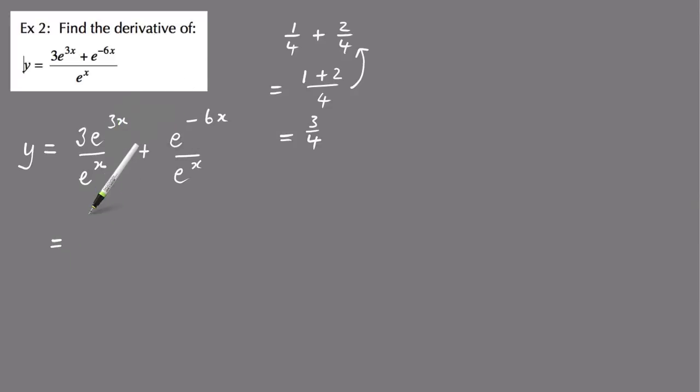And then the next step is to simplify each of these fractions, and again, using the index laws, the power here is 3x, and you minus that bottom power which is x, and then plus e to the minus 6x minus the bottom power x, and then that becomes 3e to the 2x plus e to the minus 7x, and now you can easily derive that.